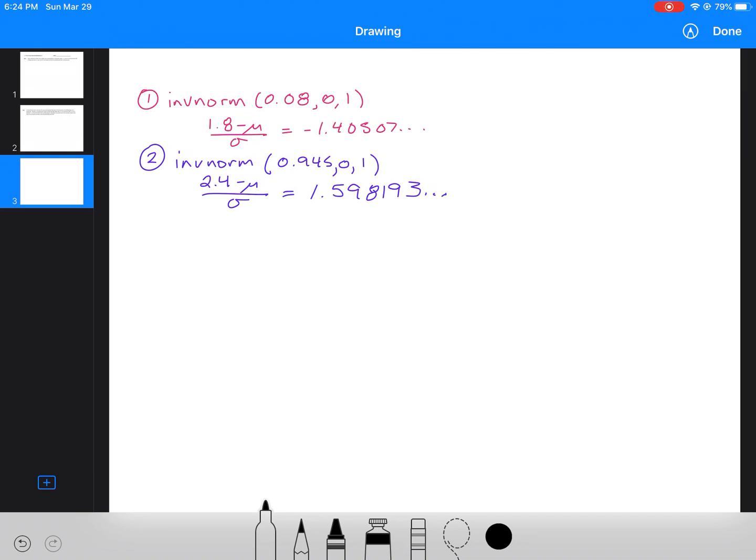So I've got two equations here. And I am going to switch to working in black. What I'm going to do is I'm going to rearrange them so that there's no longer a fraction. So this first one here, if I rearrange, I can get 1.8 = μ - 1.405σ. And then I've got μ minus 1.405.